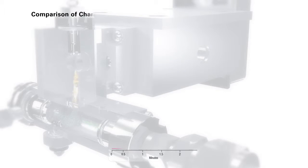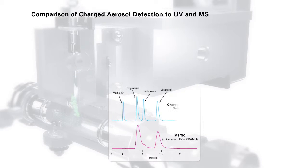This example shows a comparison of charged aerosol detection to UV and MS for the detection of pharmaceuticals. As you can see from these overlaid chromatograms, there are components detected with charged aerosol technology but not by ultraviolet detection or mass spectrometry.